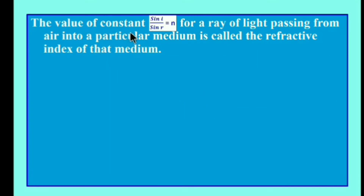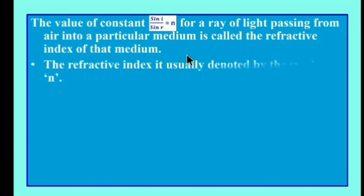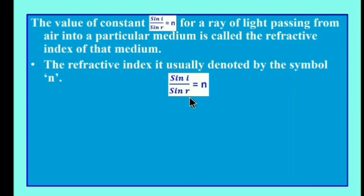The value of constant n — that is, sin i / sin r — for a ray of light passing from air into a particular medium is called the refractive index of that medium. The refractive index is usually denoted by the symbol n. n has no units.